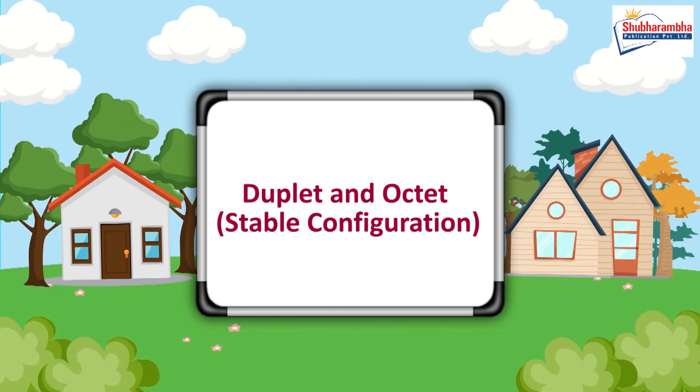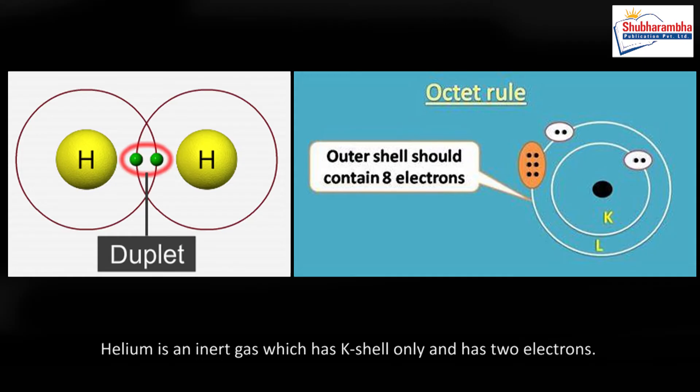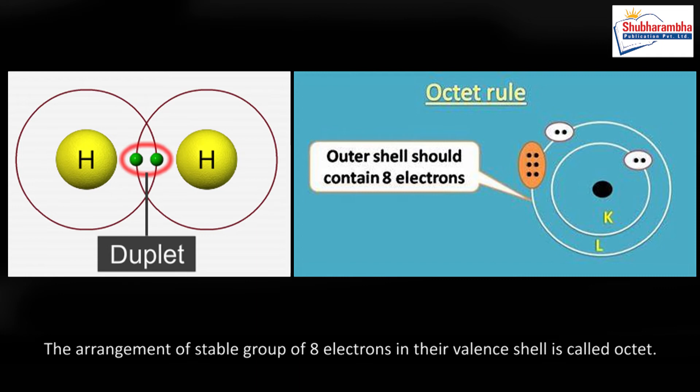Duplet and octet stable configuration. Helium is an inert gas which has K shell only and has two electrons. The arrangement of two electrons in the K shell is called duplet. The arrangement of a stable group of eight electrons in their valence shell is called octet.